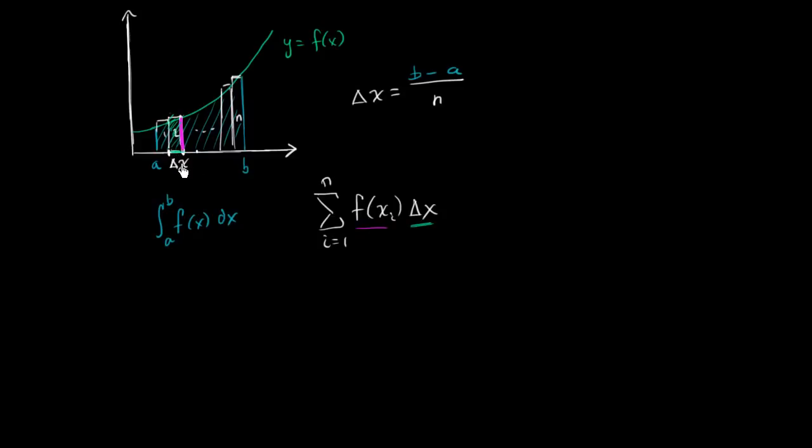And we saw that when we looked at Riemann sums and using that to approximate, and we said the one definition of the definite integral is that since this is the area, this is going to be the limit as n approaches infinity of this where delta x is defined as that. So that's one way to think about it.